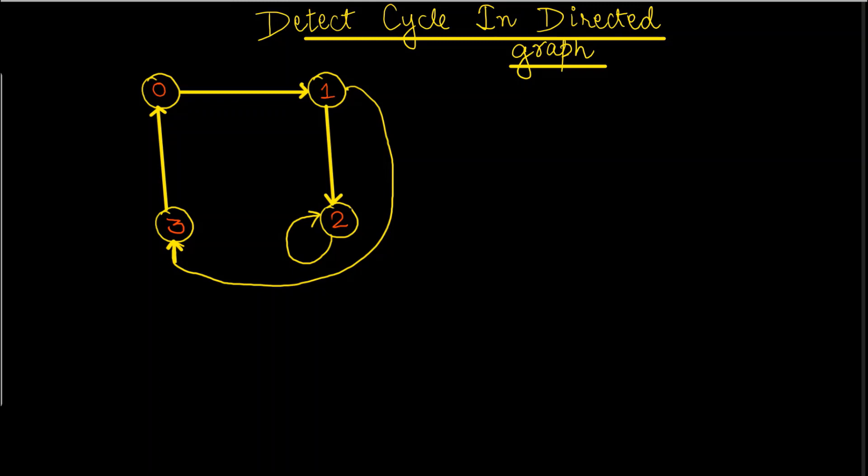Hi, welcome to NetSight OS. Today we'll start with a graph question: detect cycle in directed graph. In the last types of graph section, there are two types of graphs — undirected and directed. Directed graphs have directions that we already know. Now we'll see how to detect a cycle whenever we are given a directed graph.